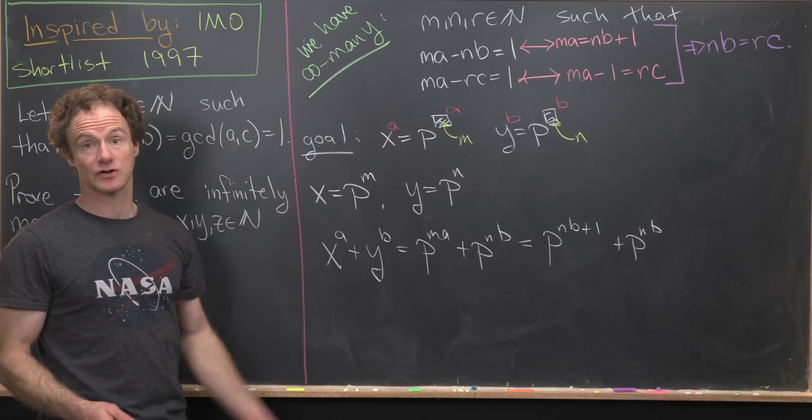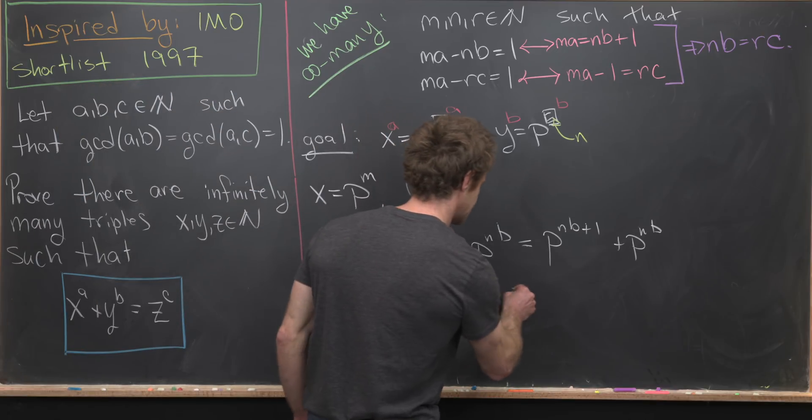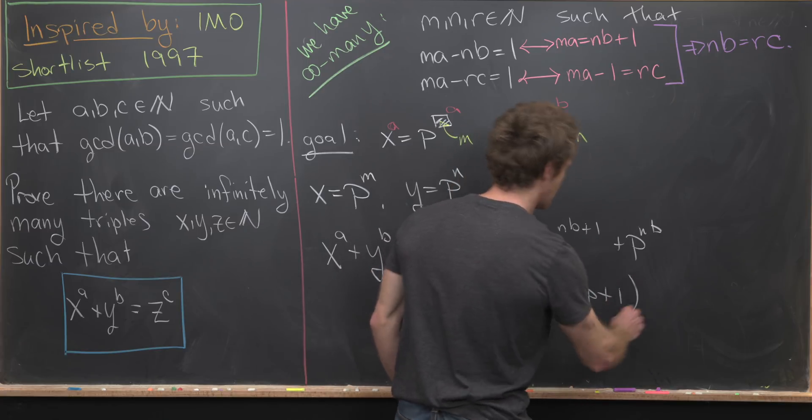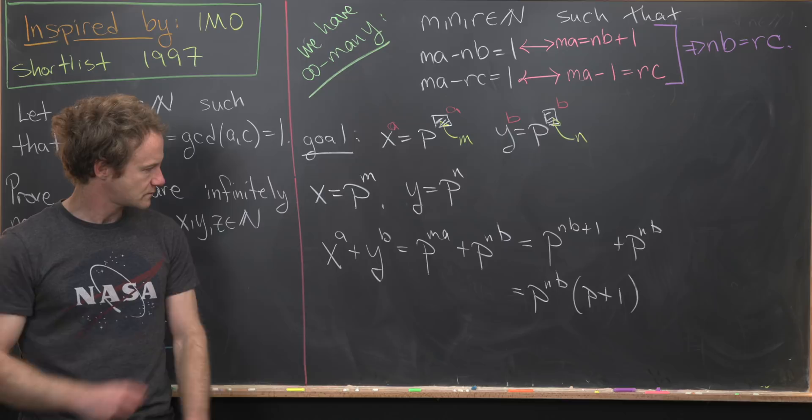So we can write this as P to the NB plus one plus P to the NB. We can go ahead and factor a P to the NB out of this. That'll give us P to the NB, and then P plus one.